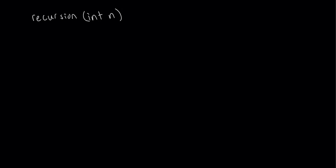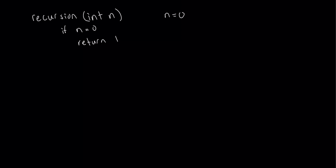First, we have a function, and we're going to call this recursion. In this recursion function, we're going to have an int value of n. This is what it's going to take in. Let's start with n equal to 0. What we're trying to do with recursion is call back on itself. But when n is 0, there is nothing left to call back on. So what we can do is return the value — if n equals 0, we can just return 1 or return n, depending on whatever your function is meant to do.